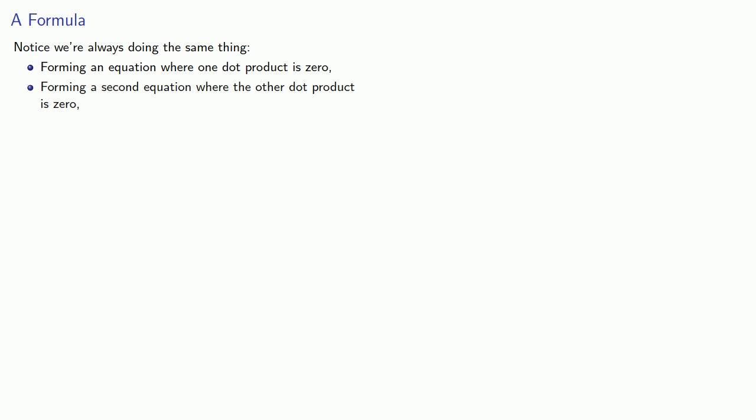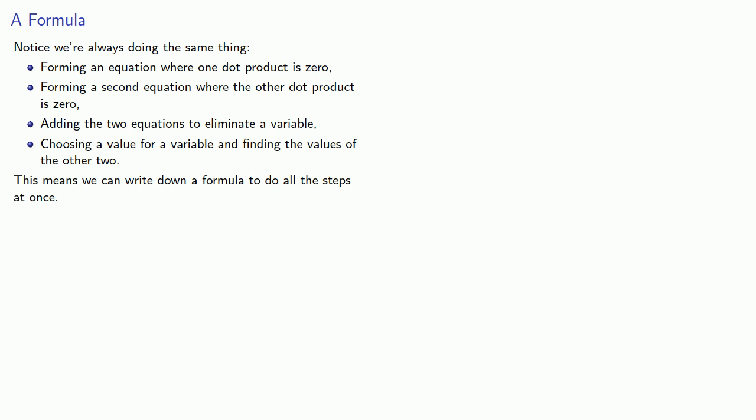And we'll make the same observation we did with the dot product. Notice we're always doing the same thing. Forming an equation where one dot product is zero. Forming a second equation where the other dot product is zero. Adding the two equations to eliminate a variable. And then choosing a value for a variable and finding the values of the other two. And remember, because we're always doing the same thing, what we can do is we can write down a formula to do all the steps at once. And fair warning, in contrast to the dot product where there was an advantage to using the dot product to find the angle between two vectors, our formula is a little bit more opaque.